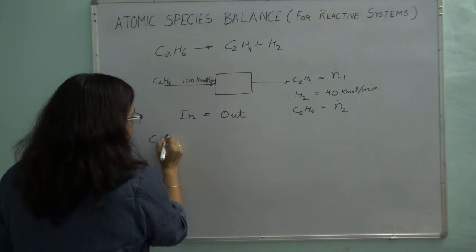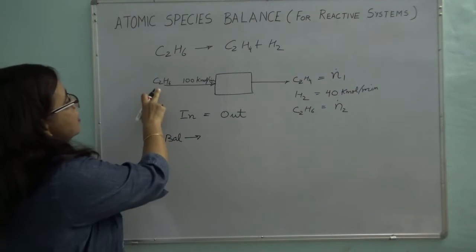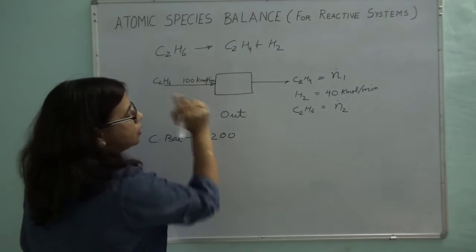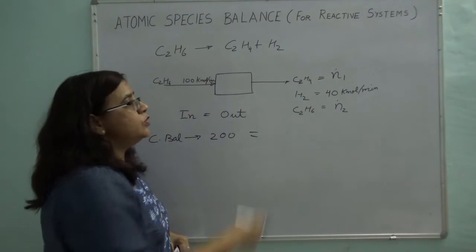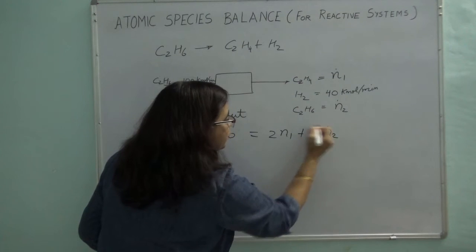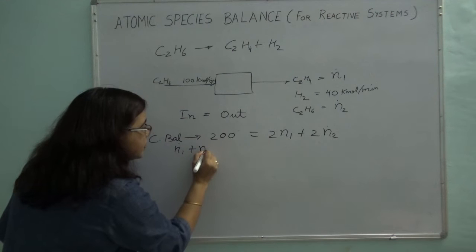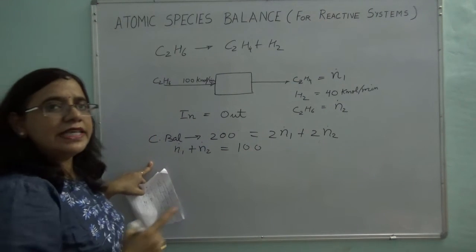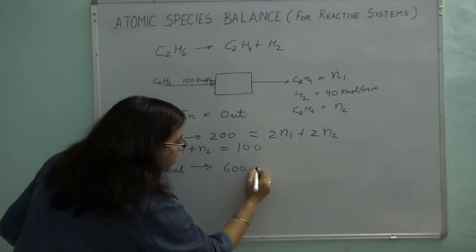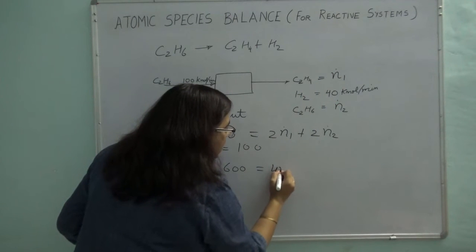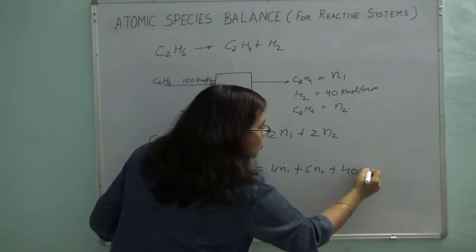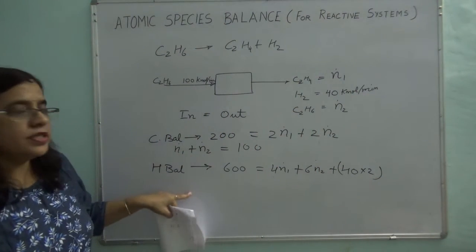Now let's take the carbon balance. 2 times 100 gives 200 kilomoles of carbon atoms going in. That equals 2 times N1-dot plus 2 times N2-dot. Dividing through by 2: N1-dot plus N2-dot equals 100. Now the hydrogen balance: 6 times 100 gives 600 going in, which equals 4 times N1-dot plus 6 times N2-dot plus 40 times 2. I now have two equations and two unknowns.